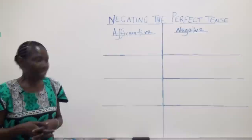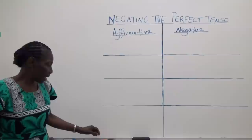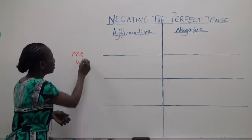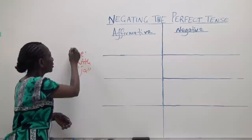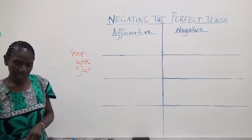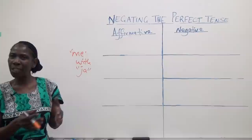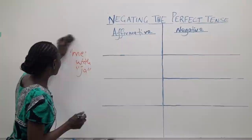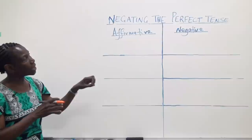In negating the perfect tense ME, we simply replace the infix ME with JA. Then we add the appropriate negative prefix before the subject marker. This construction can be translated in English as 'not yet' — an action has not yet been done.